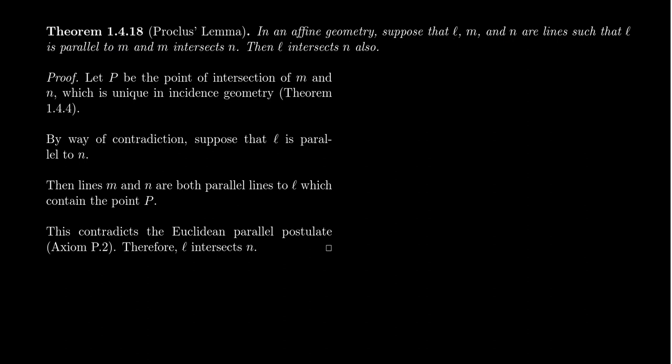We're going to prove this now. That is, if these two lines are parallel and those two lines intersect, then we guarantee that these two lines intersect. And this is going to lead directly to our transitivity of parallelism, which we'll do in just a moment.